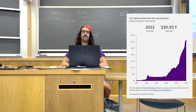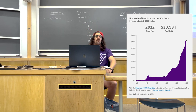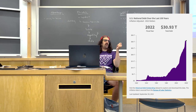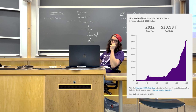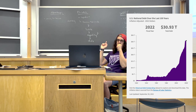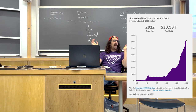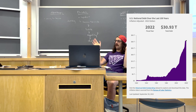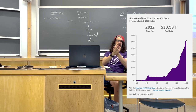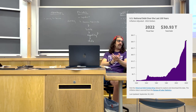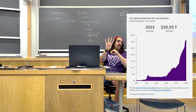Every time the US approaches the debt ceiling — the legal limit at which the government can't borrow anymore — everyone freaks out. You've probably heard politicians say the US has never defaulted on our debts. That's not true. The US has in fact defaulted on our debts four times, and the most recent time was in 1971.